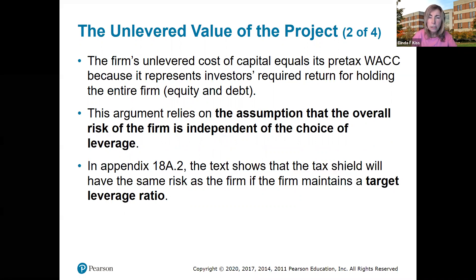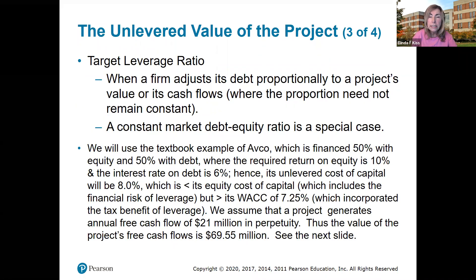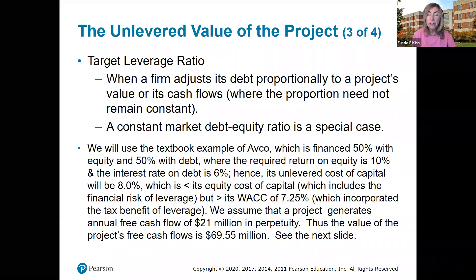This argument relies on the assumption that the overall risk of the firm is independent of the choice of leverage. When a firm adjusts its debt proportionally to its project value or its cash flows, this is our target. Using the textbook example of AVCO, which is financed 50% with equity and 50% with debt, the required return on equity is 10% and the interest rate on debt is 6%. Hence, its unlevered cost of capital will be 8%, which is less than its equity cost of capital — which includes the financial risk of leverage — but greater than its WACC of 7.25%, which incorporated the tax benefit of leverage.